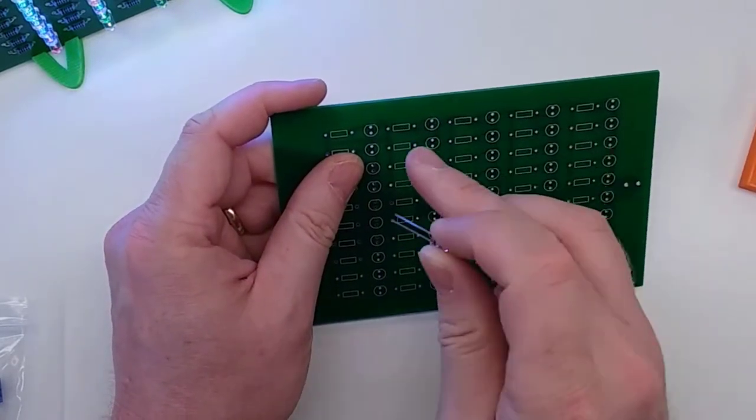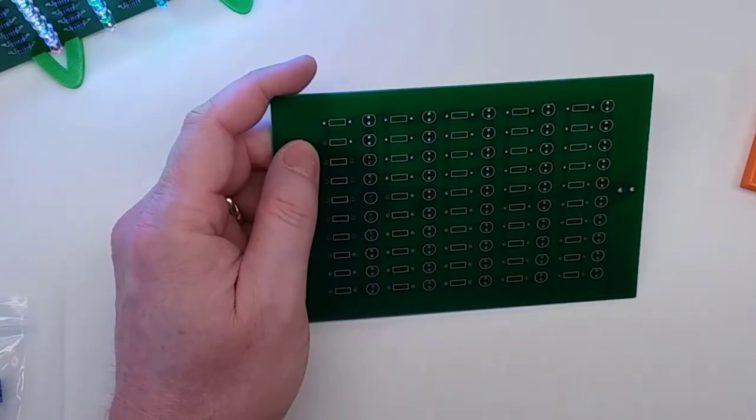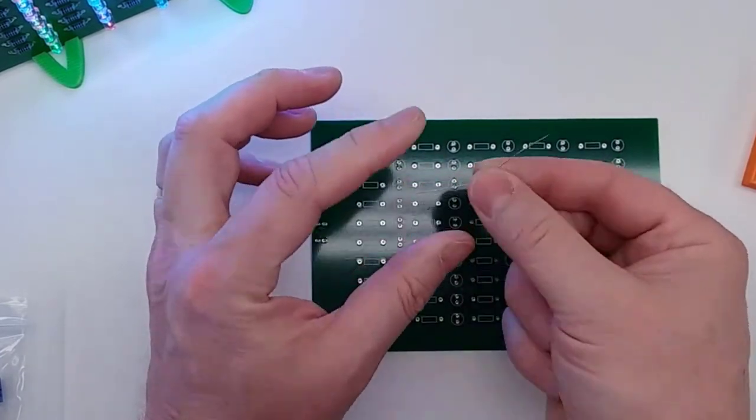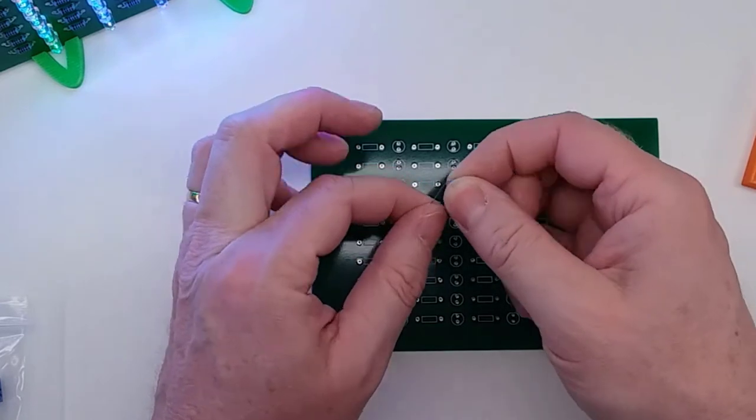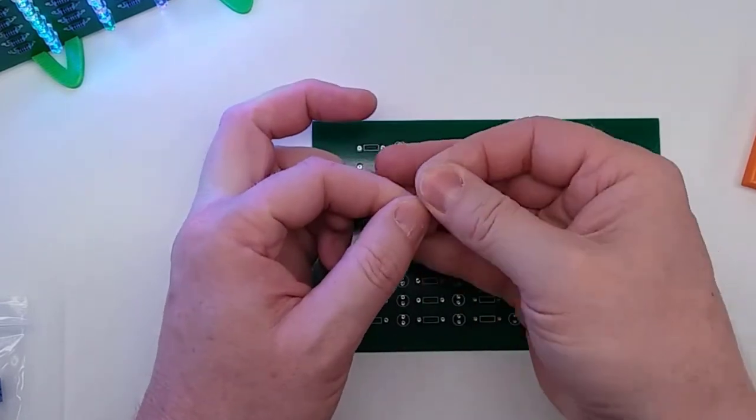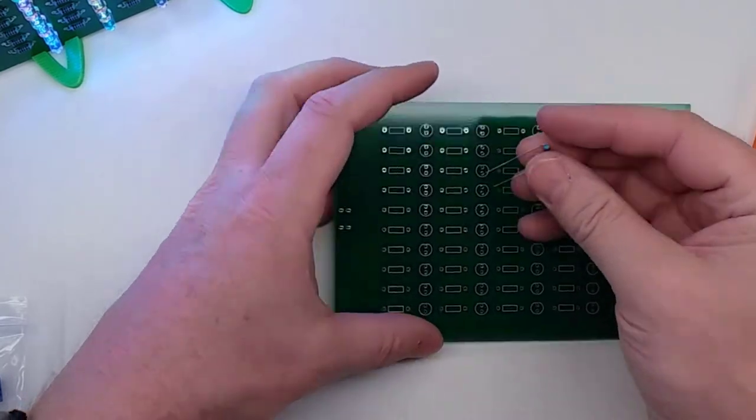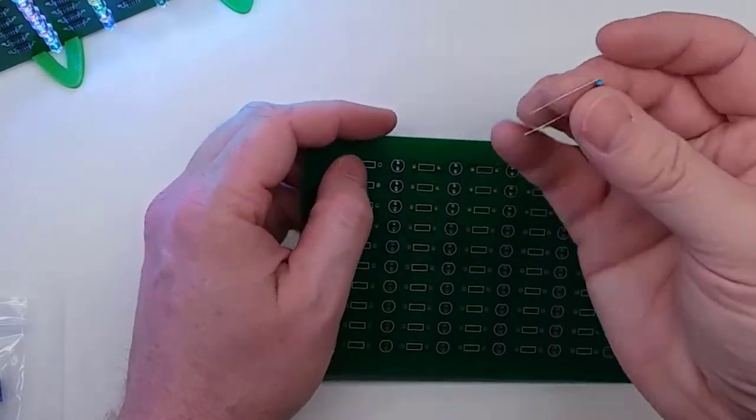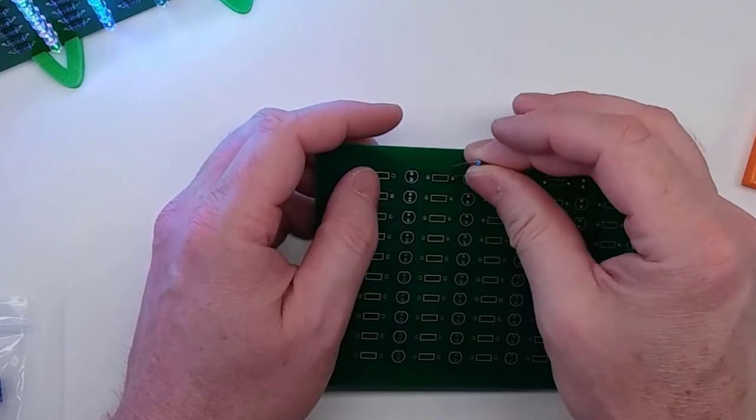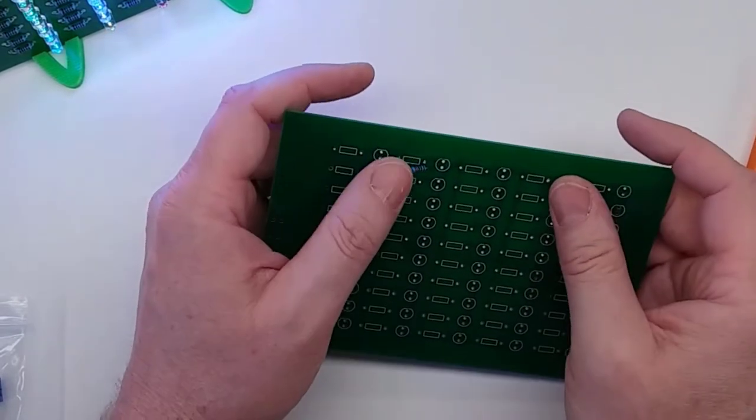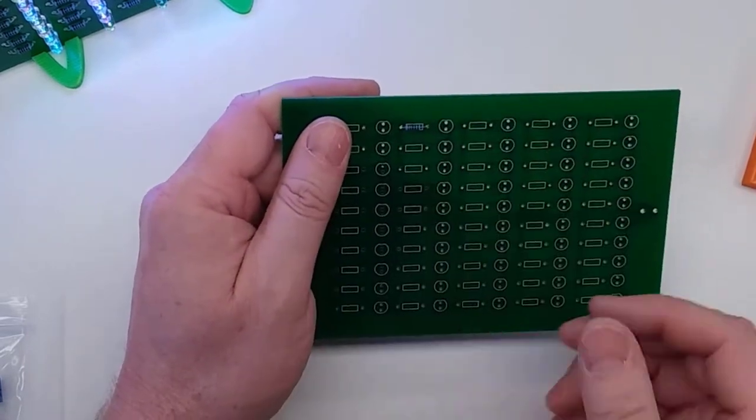But before we get to the LEDs what you're going to want to do is solder in each of these resistors. To solder these resistors in all you need to do is take them, fold them in half like this so that they're relatively close to where the component is, and then we're just going to slide that in. Now these are not polarized so these can go in either direction, it doesn't really matter. But what most people will do is they'll line up the colors accordingly so that all the colors are the same way.